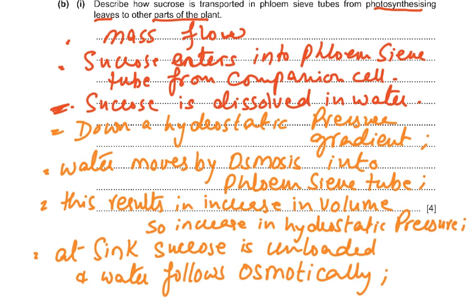Transport is by mass flow. Sucrose enters into the phloem sieve tube from the companion cell. Sucrose is dissolved in water and moves down a hydrostatic pressure gradient. Water moves by osmosis into the phloem sieve tube when sucrose enters, resulting in increased volume and increased hydrostatic pressure. At the sink — roots or elsewhere — sucrose is unloaded and water follows osmotically, creating an area of low pressure. Mass flow is from high hydrostatic pressure to low hydrostatic pressure.